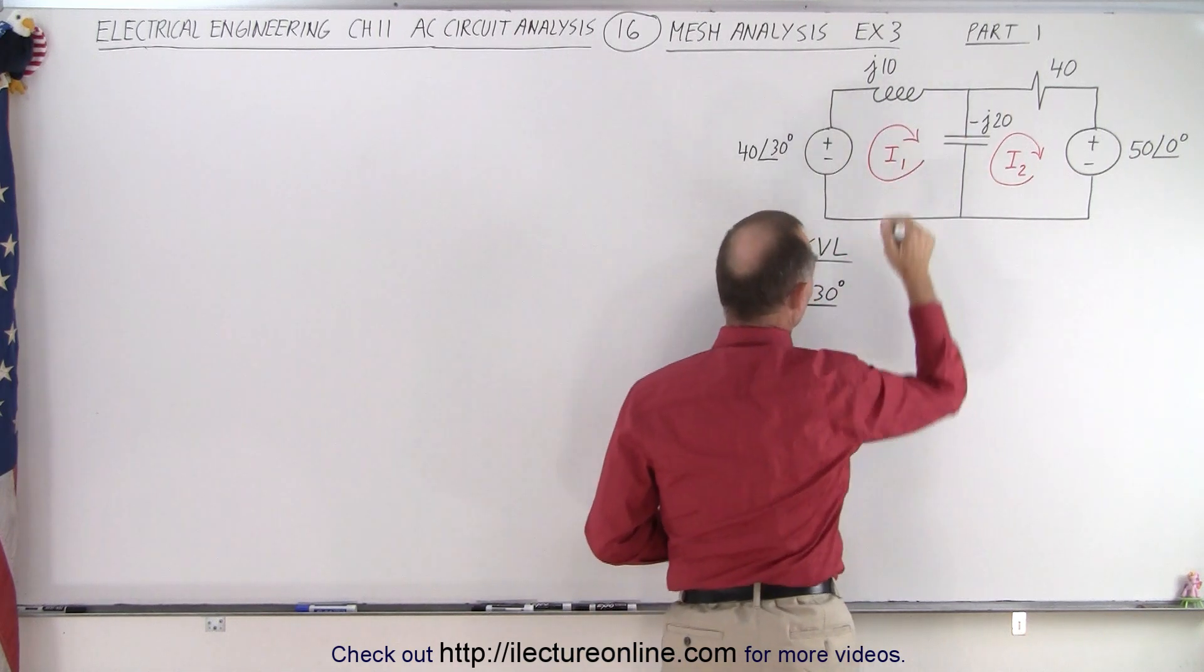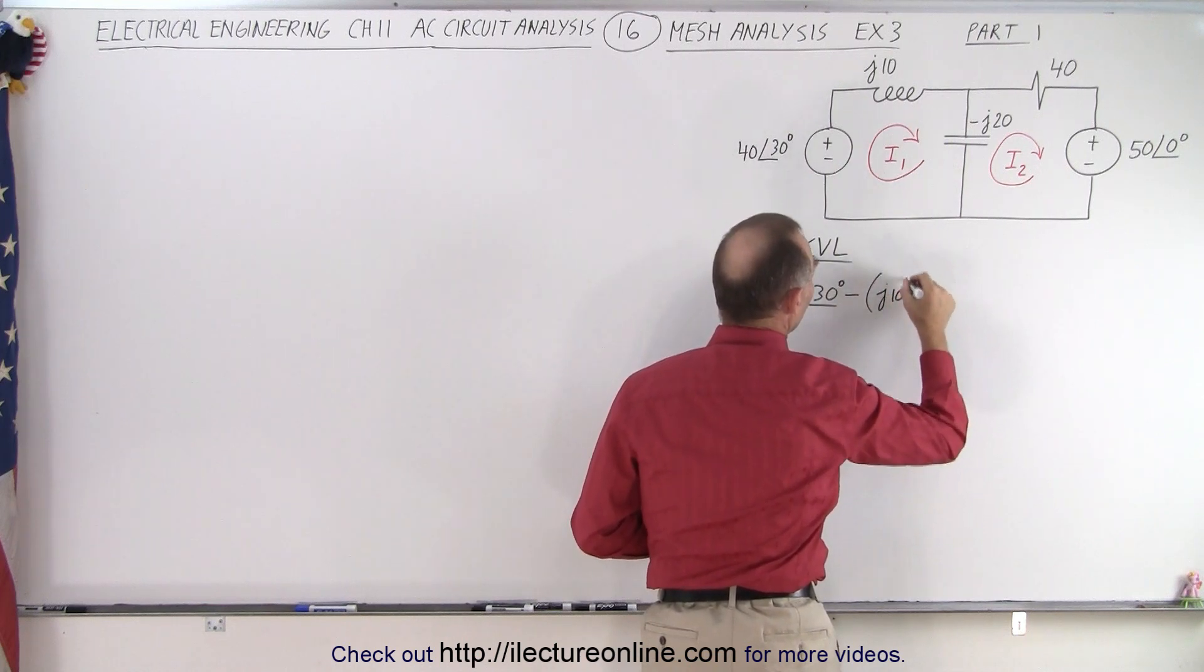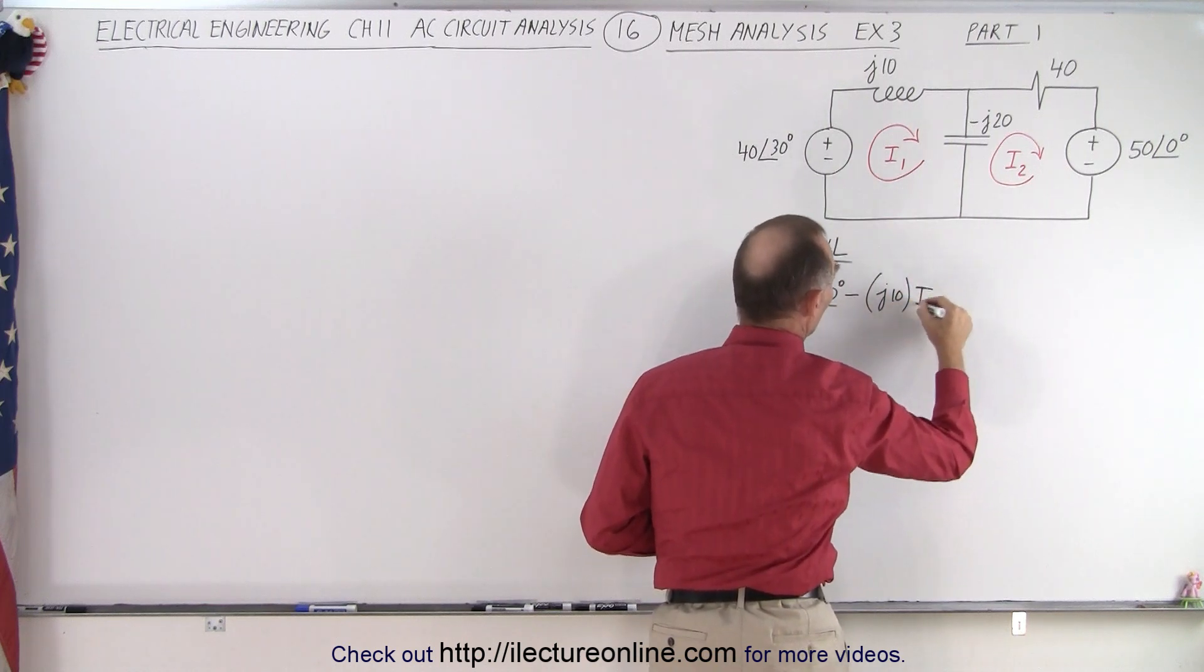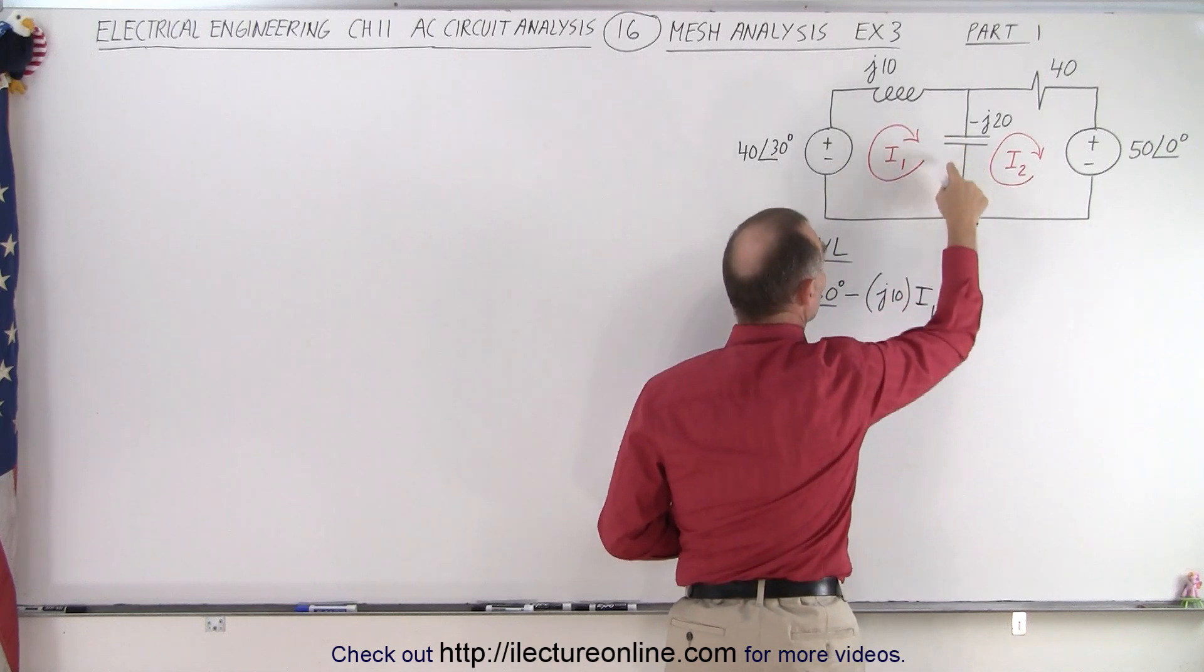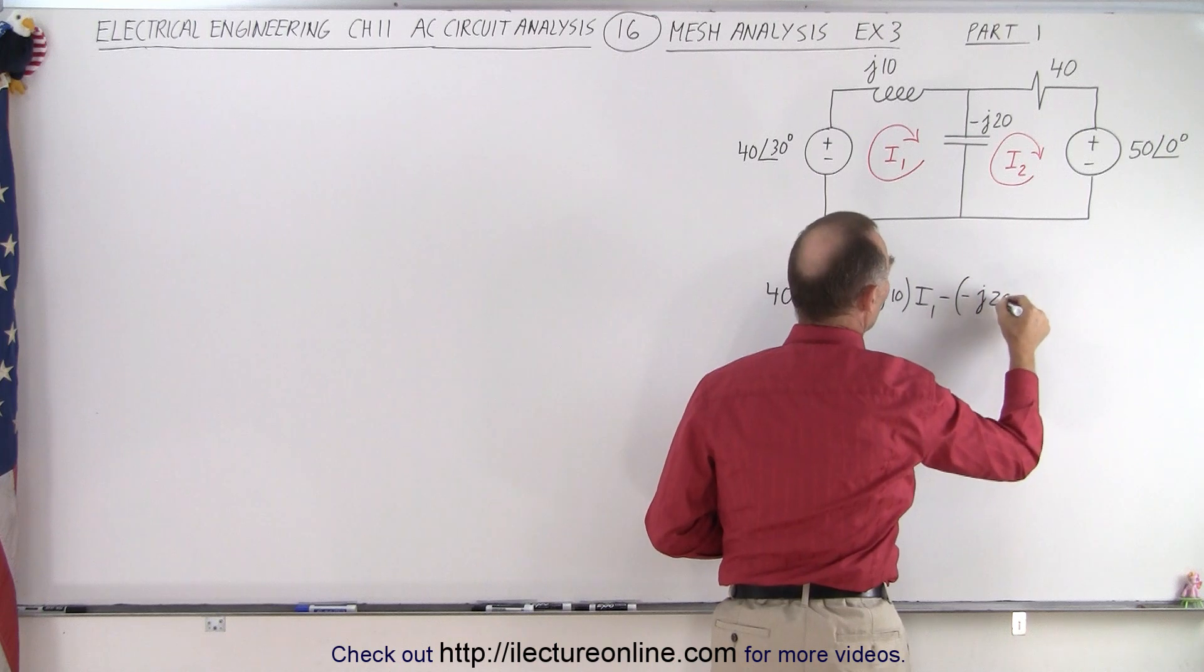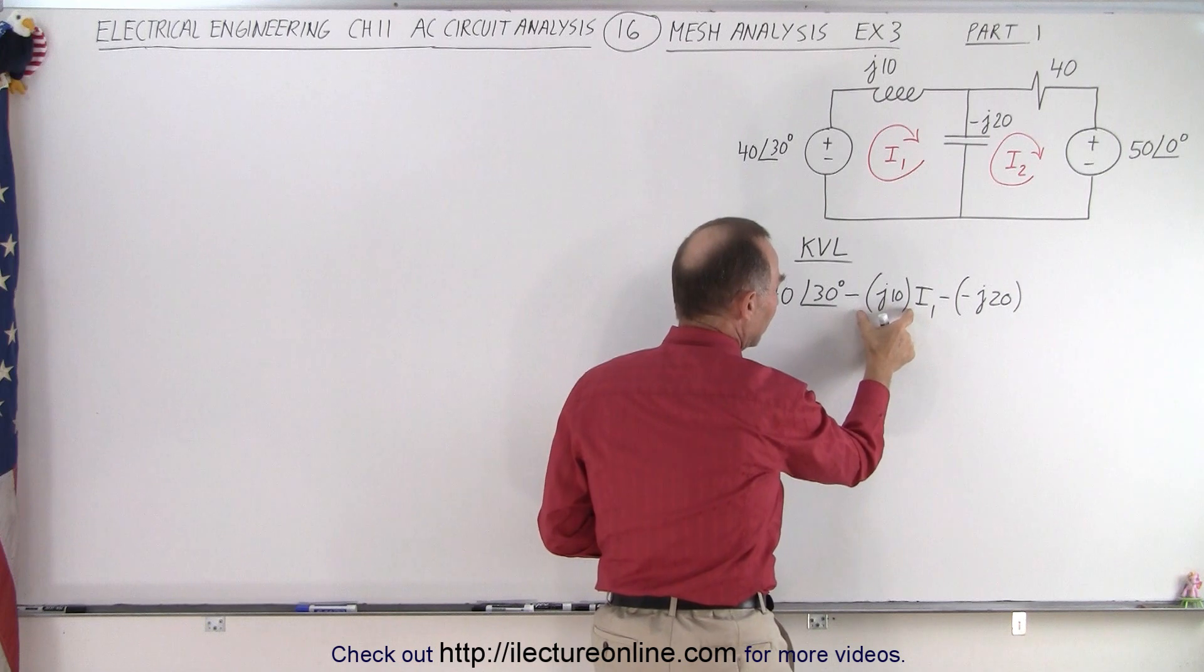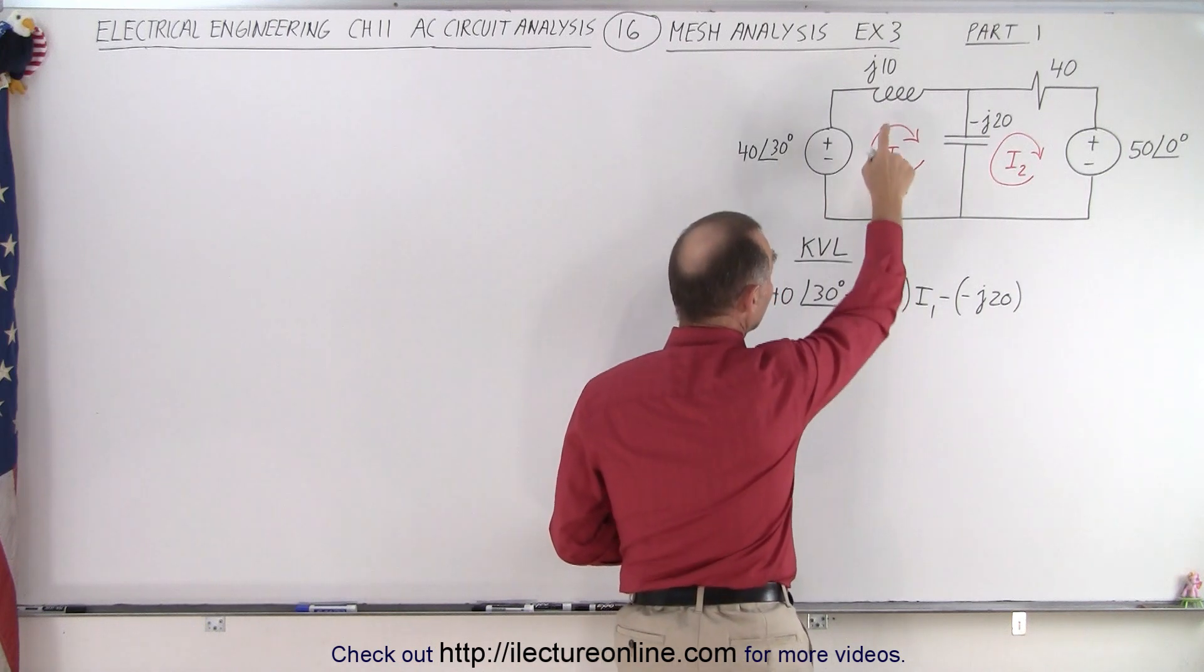So we add 40 volts with a 30 degree phase angle. Then we go across the inductor. That's a voltage drop minus J10 and that's times current I1. Then we have a voltage drop across the capacitor. So that's minus and minus J20. Notice I try to keep track of the negative sign. So I use a negative for the voltage drop. I put in parentheses what I'm dropping.